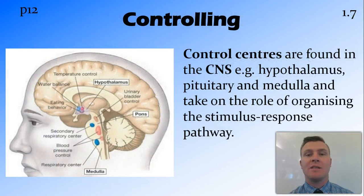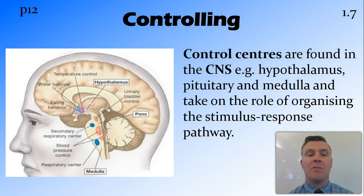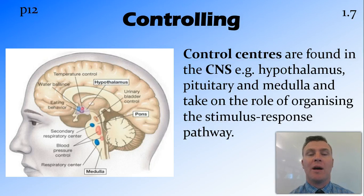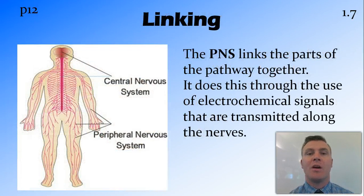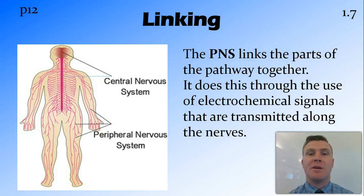This detecting and responding to stimuli is controlled in control centres, and those control centres are found in the central nervous system. Some common control centres are the hypothalamus, the pituitary gland, and the medulla, which are all found in the brain. These organise and control the stimulus-response pathway. The role of the peripheral nervous system is to link all the different components of the stimulus-response pathway together and communicate messages between them through electrochemical signals transmitted along the surface of nerves that move all around the body.